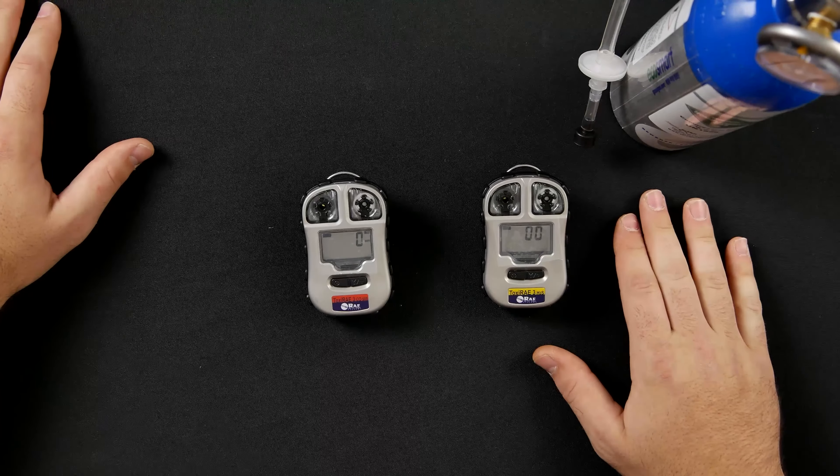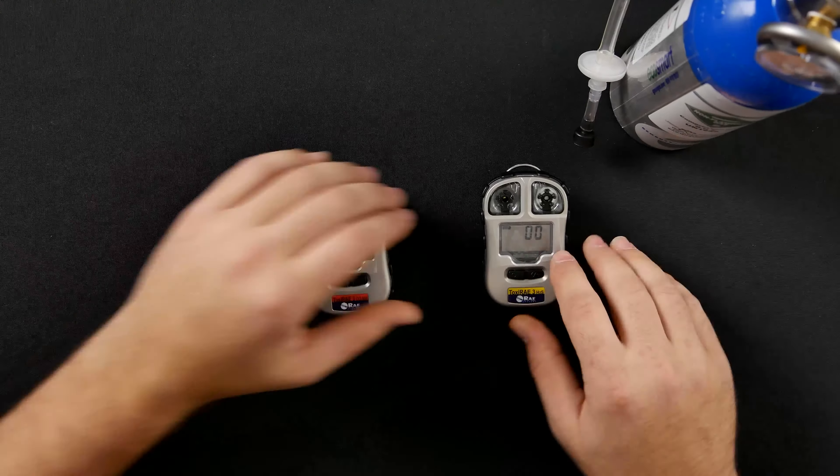The code for the H2S meter is the same as the CO meter, 1, 1, 1.